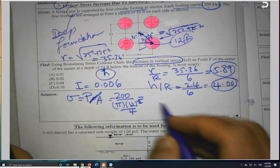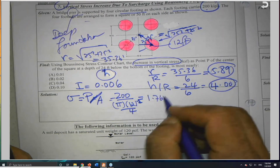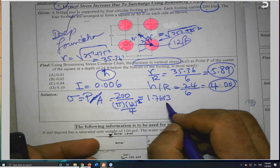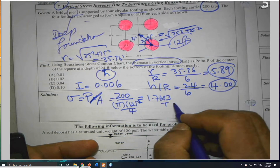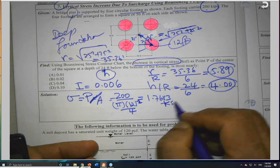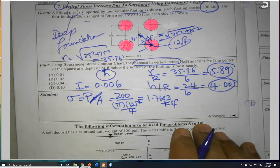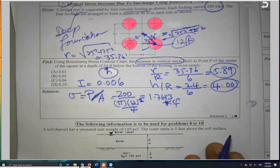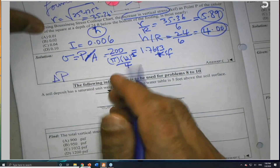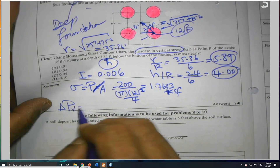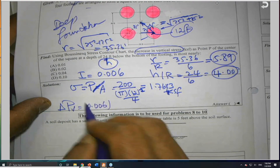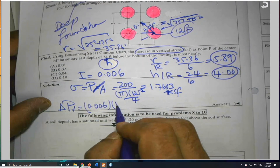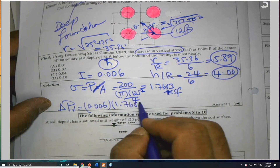Computing 200 divided by (π × 144 / 4) gives 1.7683 ksf. Now the equation: delta σ_v equals I times σ, which is 0.006 times 1.7683, giving approximately 0.0106 ksf — roughly 0.01 ksf.